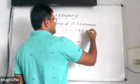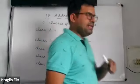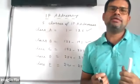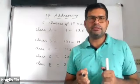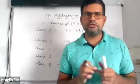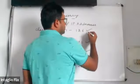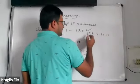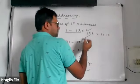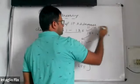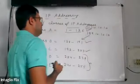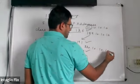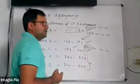The next question is: how do you know which class an IP address belongs to? The answer is that the first octet of an IP address decides which class it belongs to. For example, if I have an IP address 129.10.10.10, since 129 falls in the range 128–191, this IP address belongs to Class B.